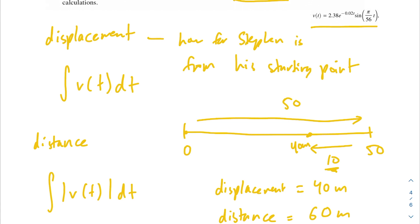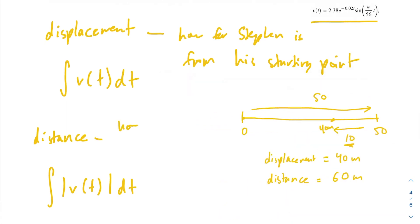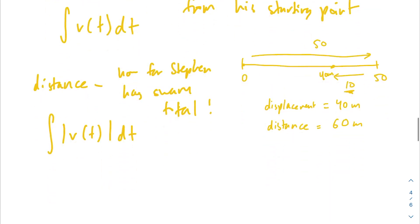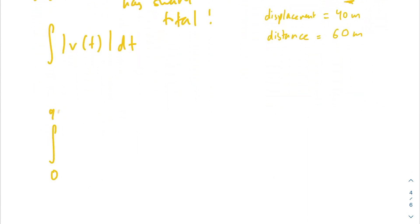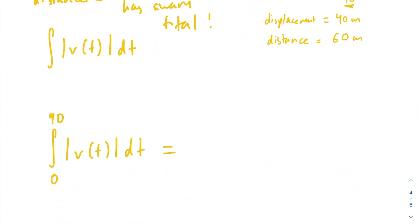By taking the absolute value of the velocity equation, everything is above the x-axis, giving us a running total rather than subtracting. Distance is how far Stephen has swum in total. So we compute the integral from 0 to 90 of the absolute value of v of t dt. Plugging that into your calculator gives 62.164 meters.